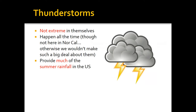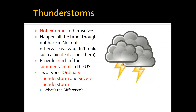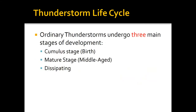There are two types of thunderstorms: ordinary thunderstorms and severe thunderstorms. We're going to talk primarily about ordinary thunderstorms in this lecture, and then severe thunderstorms in the next lecture. Just like a human, thunderstorms actually have a life cycle — they evolve over time. Typical ordinary thunderstorms have three stages of development.